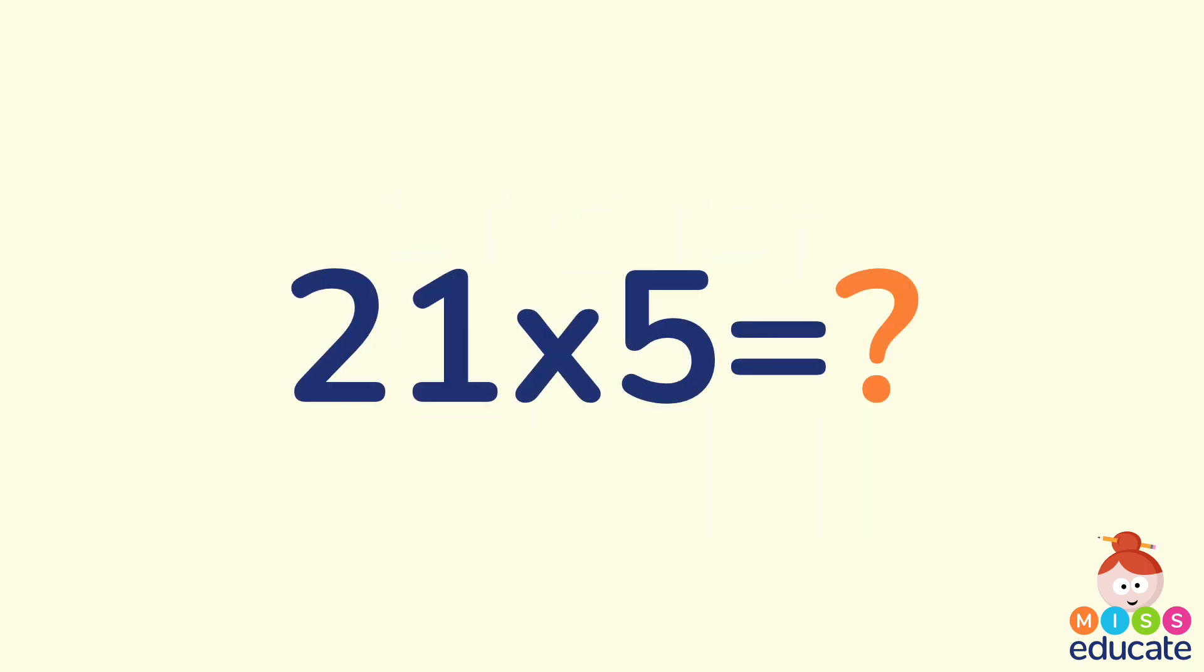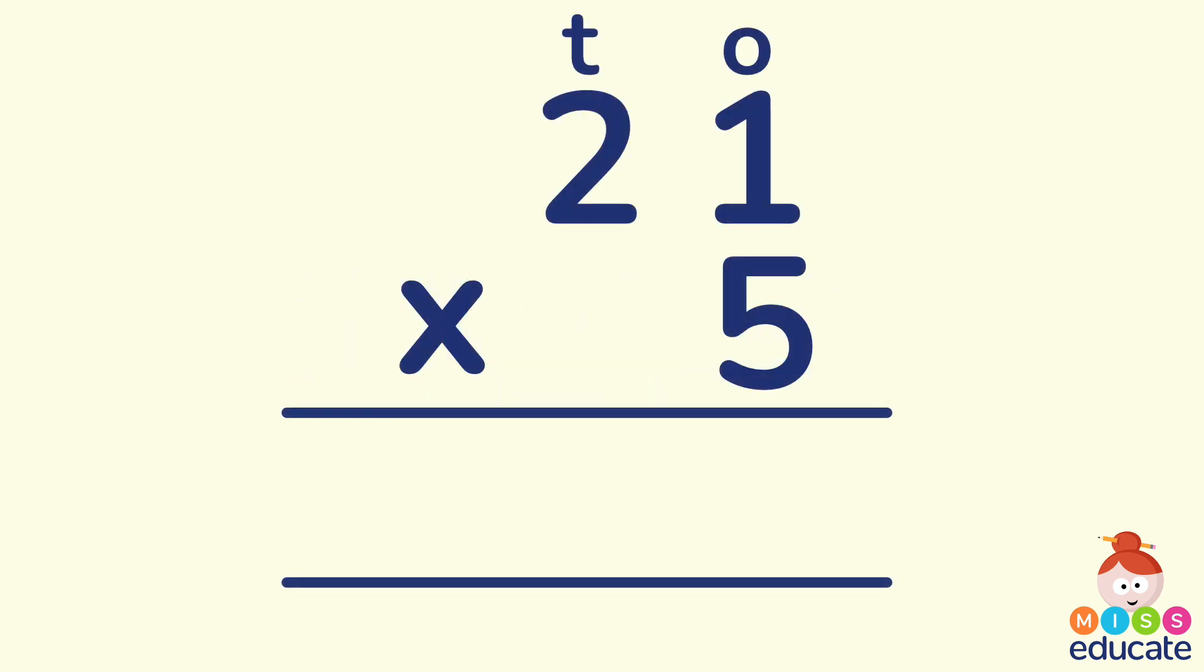Here we have a multiplication sum, 21 multiplied by 5. With short multiplication you would lay this out in columns much like you would do with your column subtraction or column addition. That would look like this. So here we have our 21, so our 2 tens and our 1 in the ones column and our 5 underneath. The multiplication symbol to the left and two lines where we're going to write our answers.